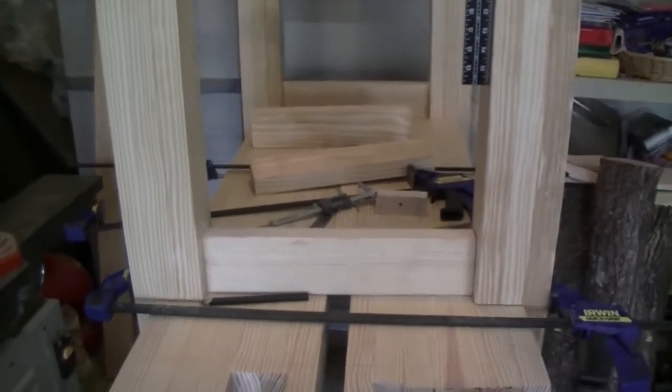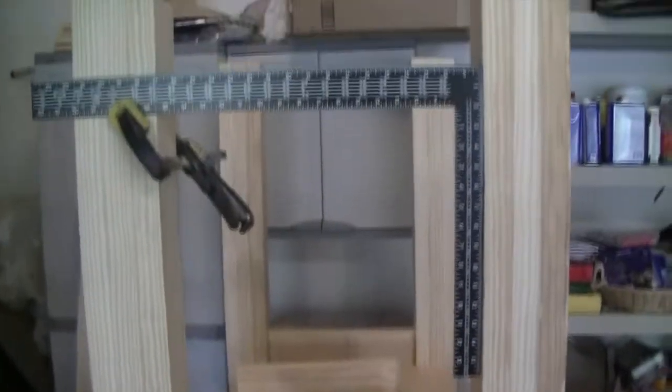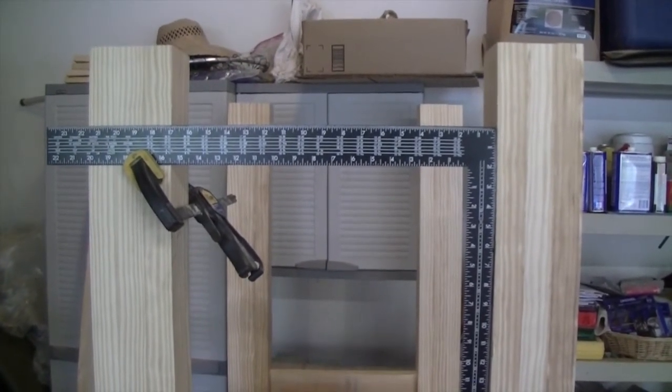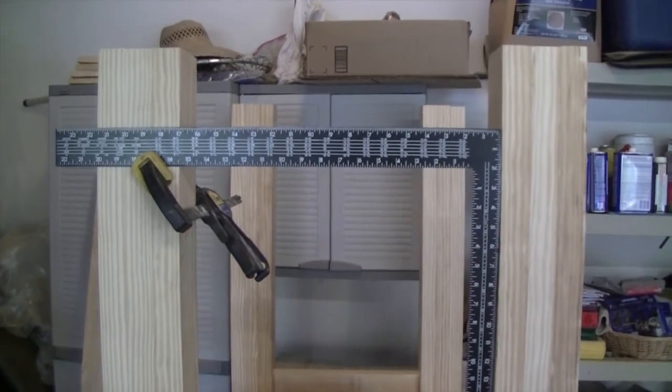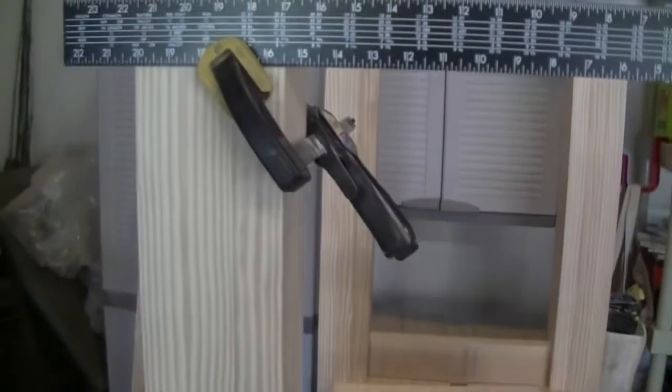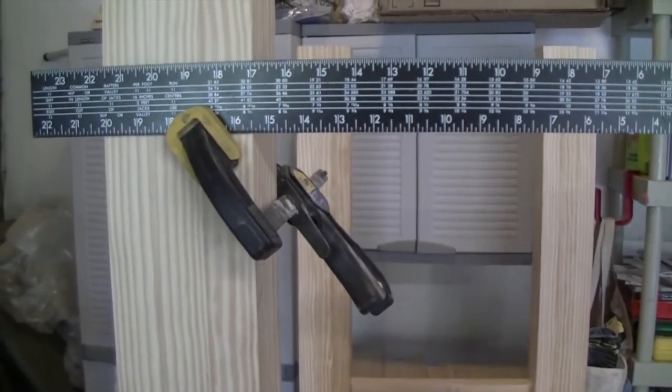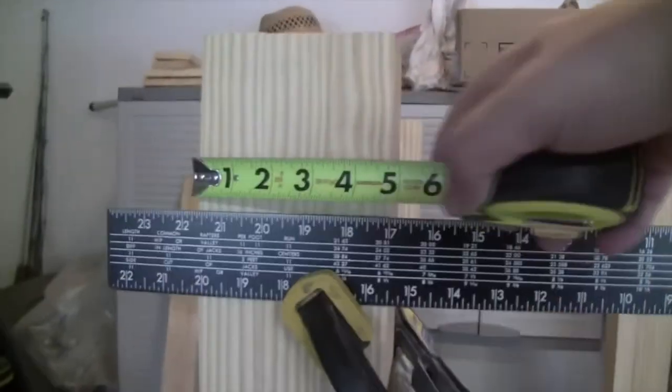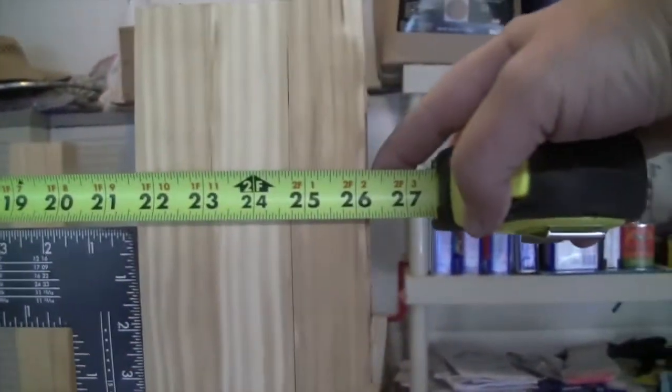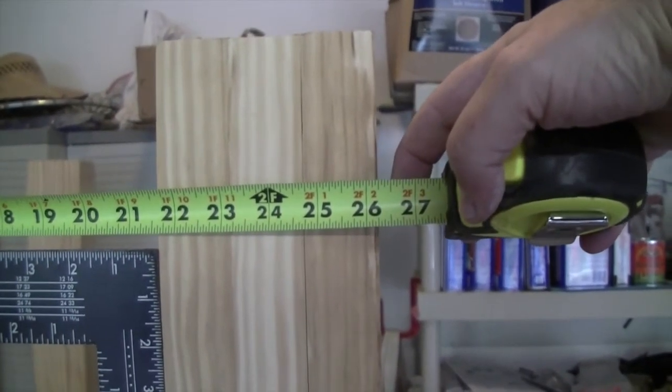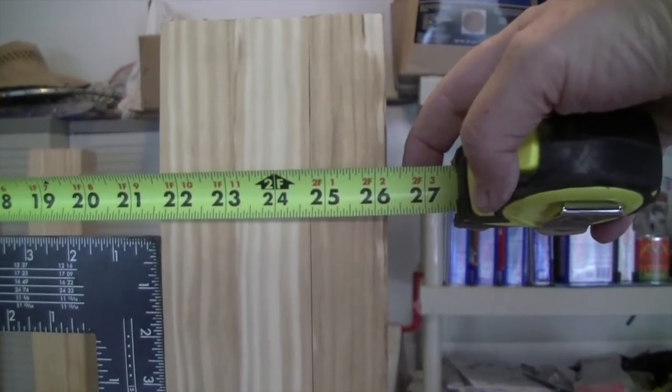All right, so I got the mortise and tenon done on the bottom support, and now what I'm going to do is I'm actually going to create one of the cross braces, and I'm going to do a half lap joint on this one. So, what I did was I just clamped a square in here, so you can see that it holds it perfectly square, so this leg and this leg are perfectly parallel. And then all I'm going to do is I'm going to measure how much wood I need from this side of here to the side of here. And that's twenty-six and a quarter.